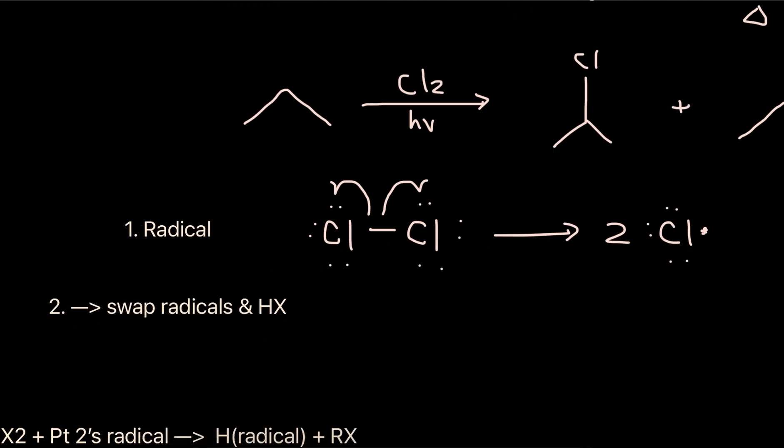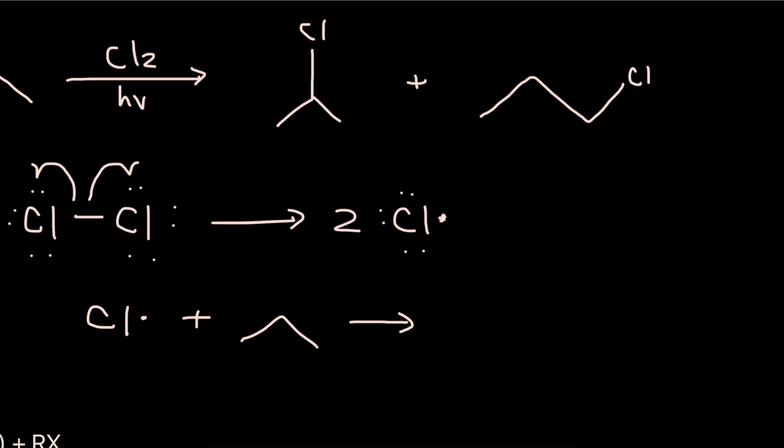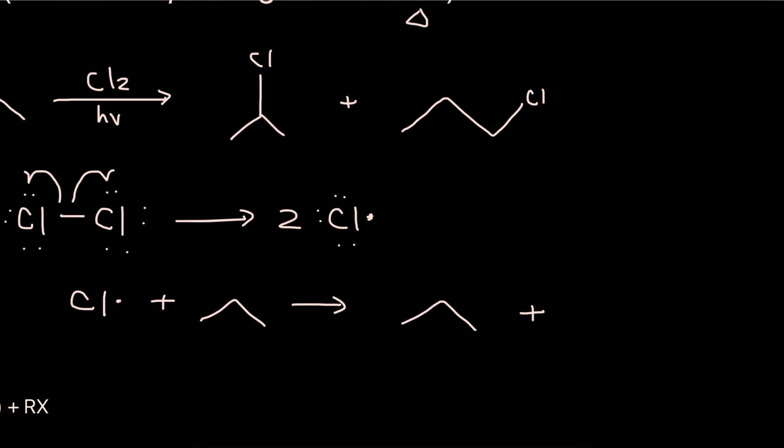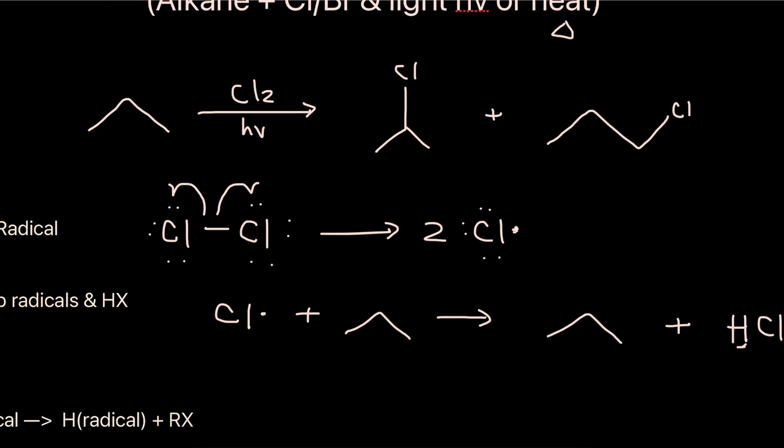Next, we will use this chlorine radical to react with our alkane. This is going to swap the radical. The chlorine's radical is going to go on this alkane, and the chlorine is going to, in turn, get the hydrogen from that alkane.